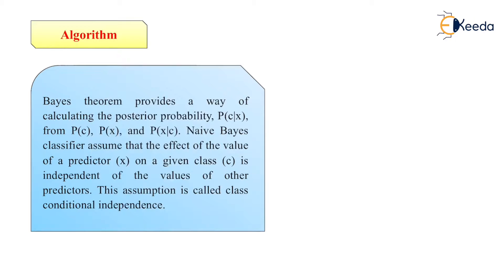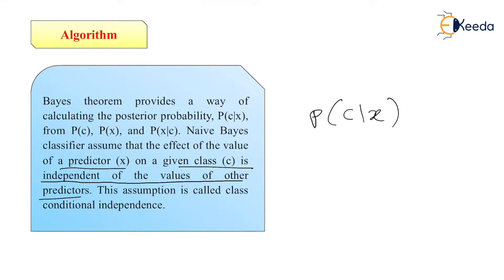The algorithm of Naive Bayes: the Bayes theorem provides a way of calculating the posterior probability P(C|X) — that is, probability of class C given X — from P(C), P(X), and P(X|C), that is the probability of C, probability of X, and probability of X given C. Naive Bayes classifiers assume that the effect of the value of a predictor X on a given class C is independent of the value of other predictors. This assumption is called class conditional independence.